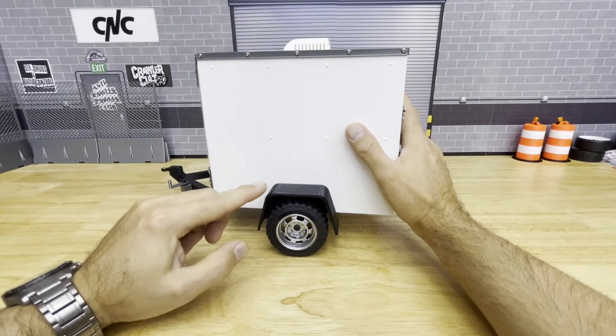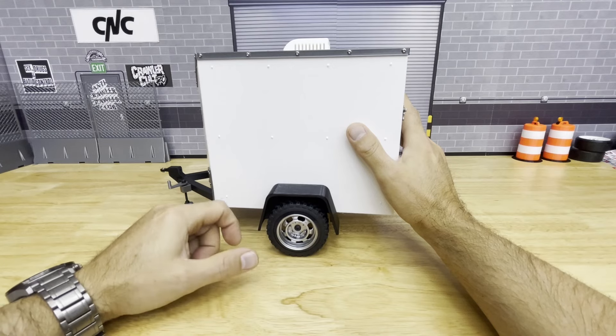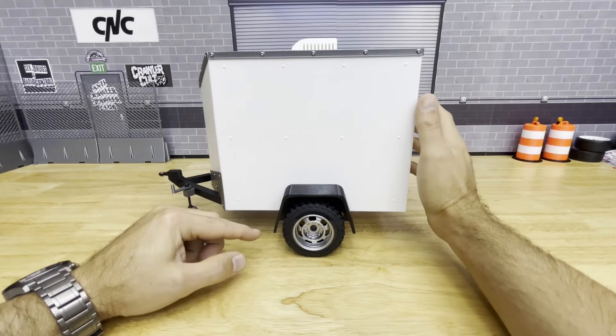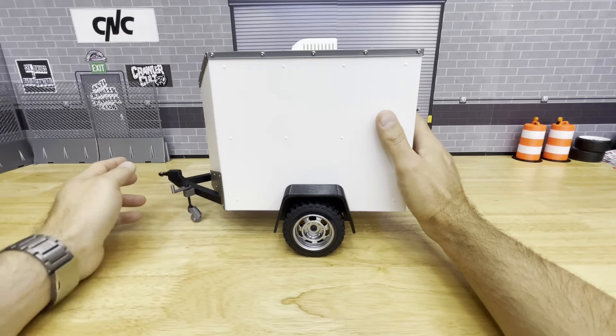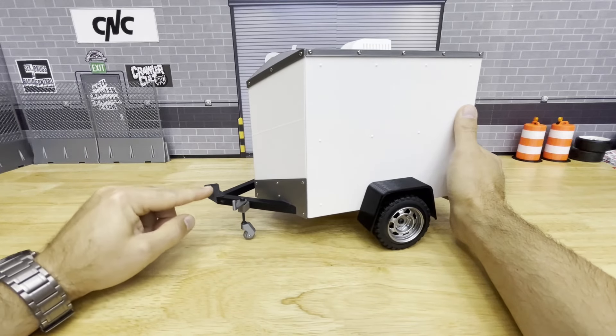There's a couple different axle heights. There are options to run the Amazon style axle or to print your own axle, which is on this trailer. There's a couple different hitch height options as well.